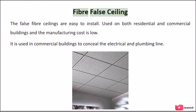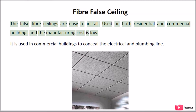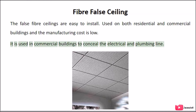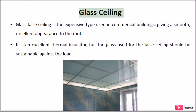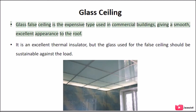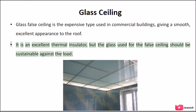Fiber Fall Ceiling: false fiber ceilings are easy to install, used in both residential and commercial buildings, and the manufacturing cost is low. They are used in commercial buildings to conceal electrical and plumbing lines. Glass Ceiling: glass fall ceiling is the expensive type used in commercial buildings, giving a smooth, excellent appearance to the roof. It is an excellent thermal insulator, but the glass used for the fall ceiling should be sustainable against the load.